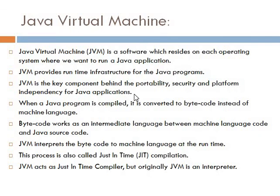That means you can run Java applications in different electronic gadgets such as desktops, laptops, smartphones, mobile phones, washing machines, personal digital assistants, etc. The JVM provides more enhanced security and it is platform independent. That is because Java applications can run on different operating systems such as Windows 8, Windows 7, Linux, Unix, etc.